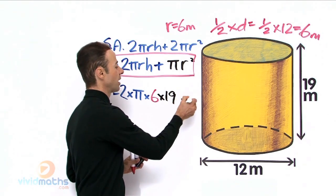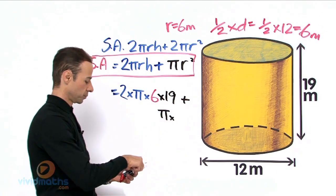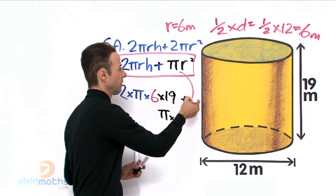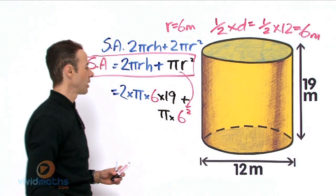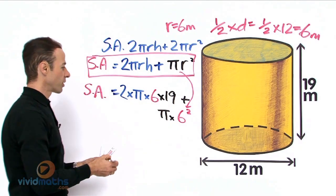Now we are going to add to that the πr² and that's this part down here, πr². Let's all work that out bit by bit.